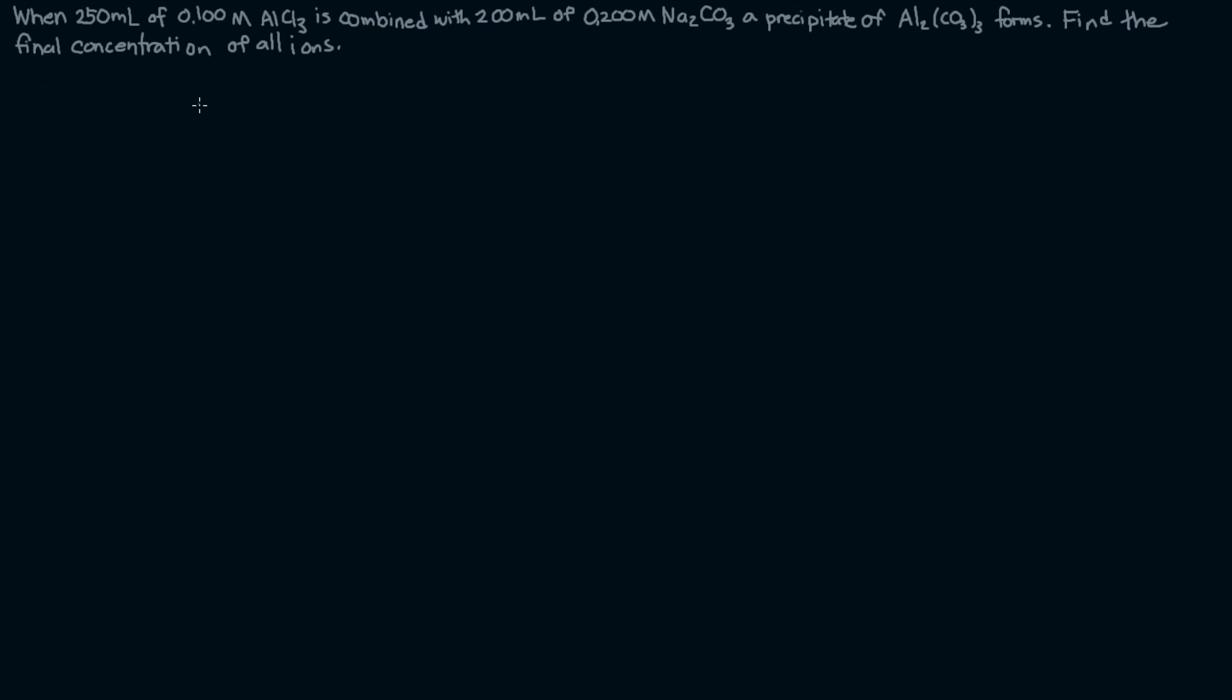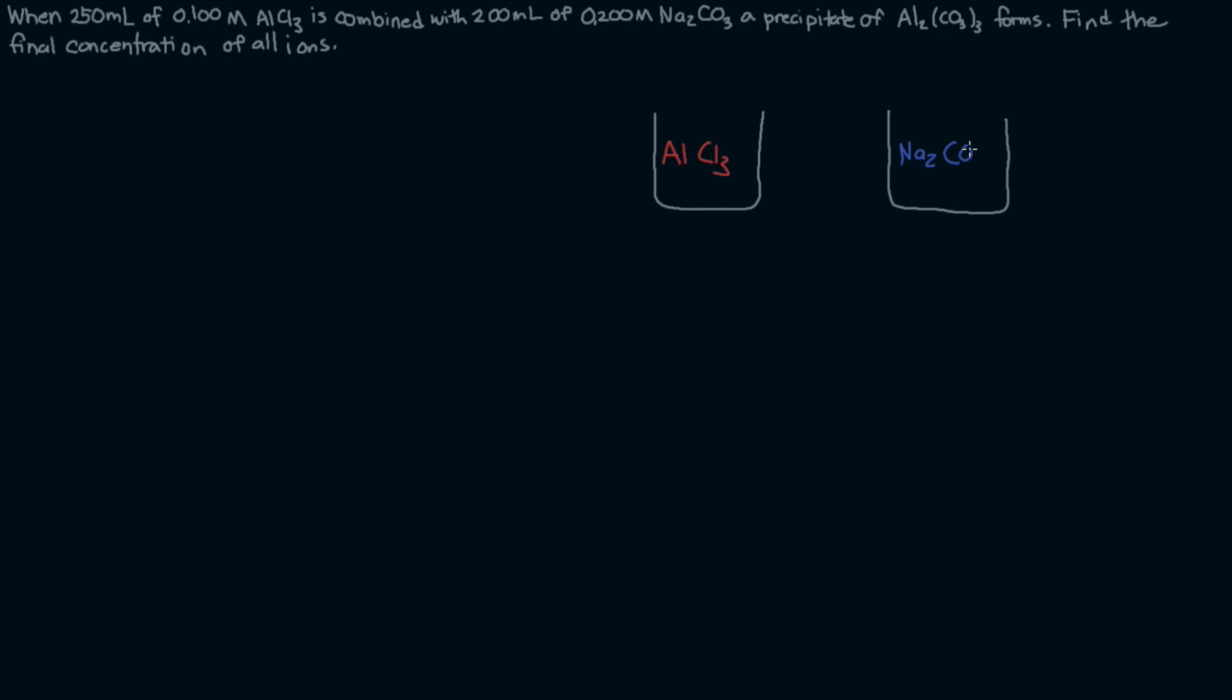I want to first look at a visual representation to help see what's going on. Here are our two solutions. Let's put the aluminum chloride in one of them, AlCl3, and in the other one we'll have our sodium carbonate, Na2CO3. We have these two solutions and we are going to combine them into one solution.